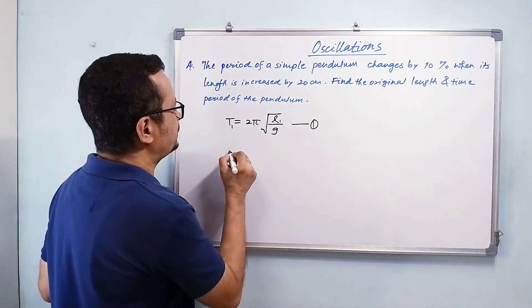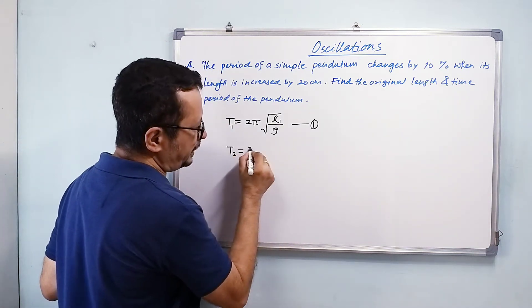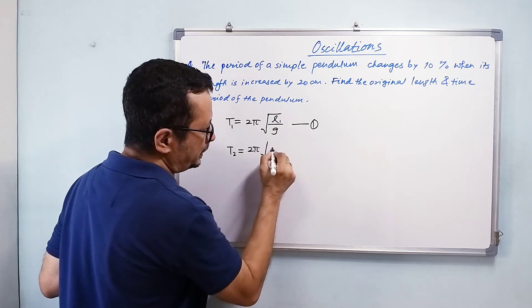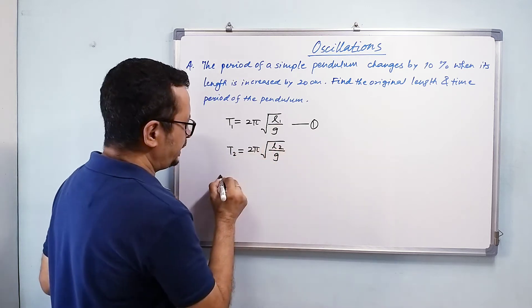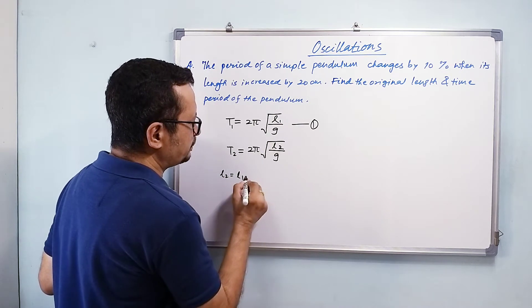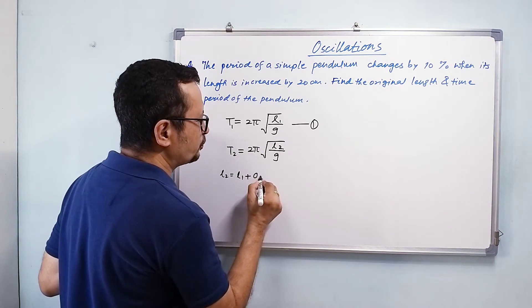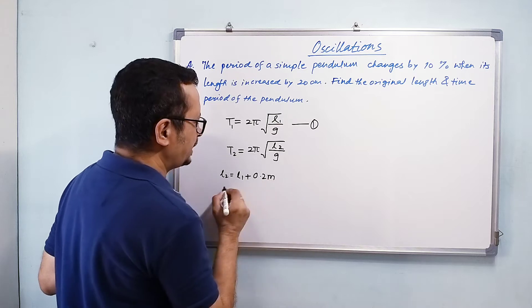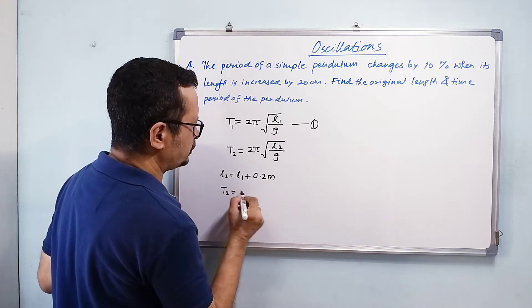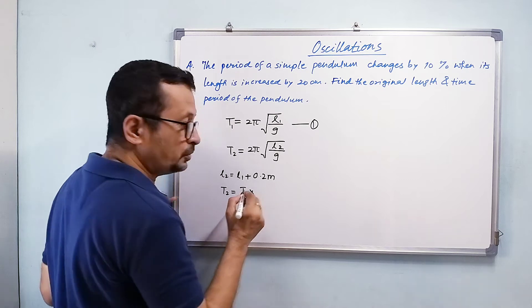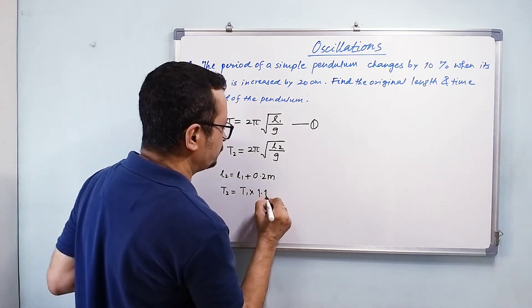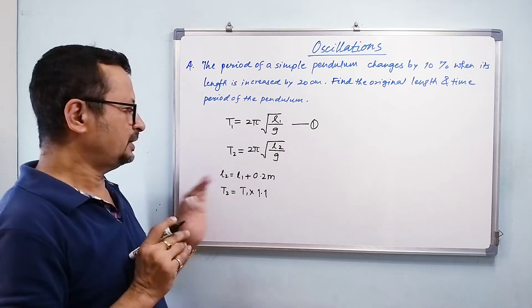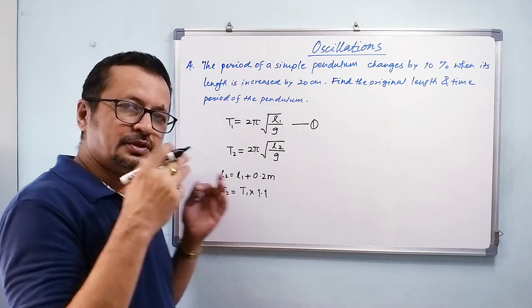So my T₂ = 2π√(l₂/g), and my l₂ = l₁ + 20 cm, that is 0.2 meter. And T₂ = T₁ × 1.1. These are the changes in the time period and the length.